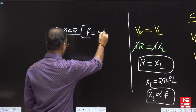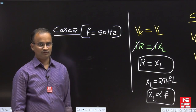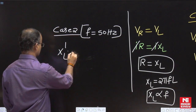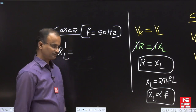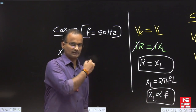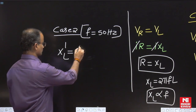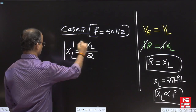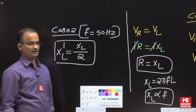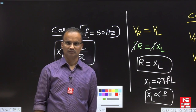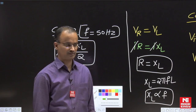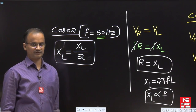In Case 2, the operating frequency is 50 Hz. Compared to Case 1, the frequency becomes exactly half. Since inductive reactance is directly proportional to frequency, the new inductive reactance XL' also becomes exactly half: XL' = XL/2. The resistance value will not change. The question asks for the voltage across the resistance when the supply frequency is 50 Hz.